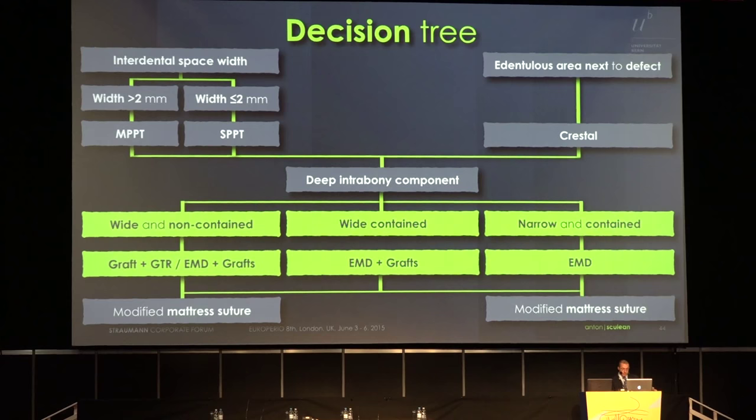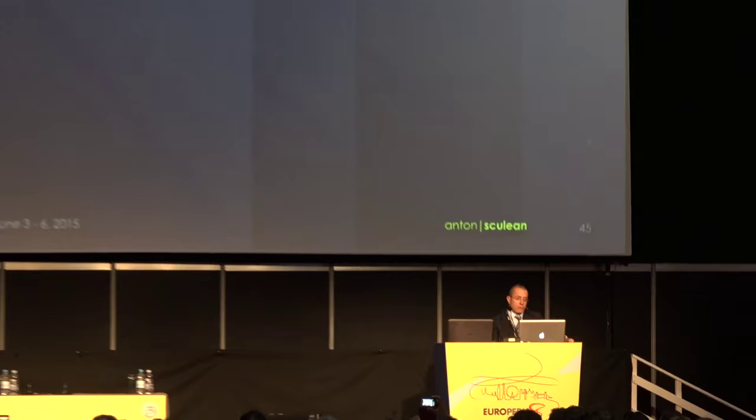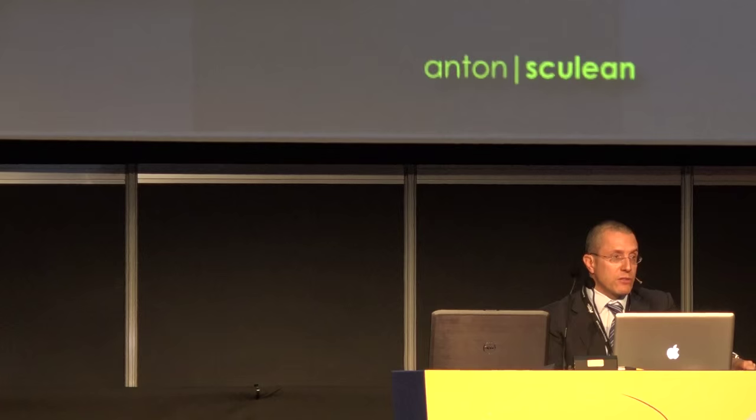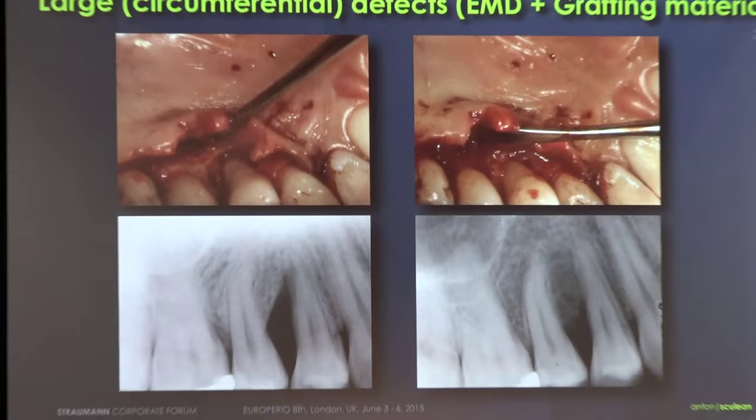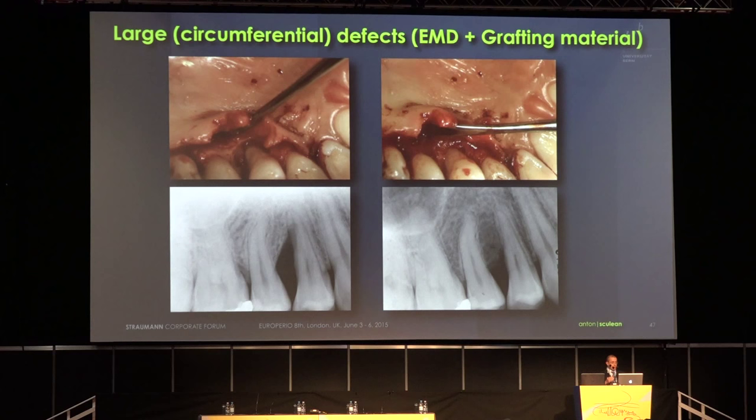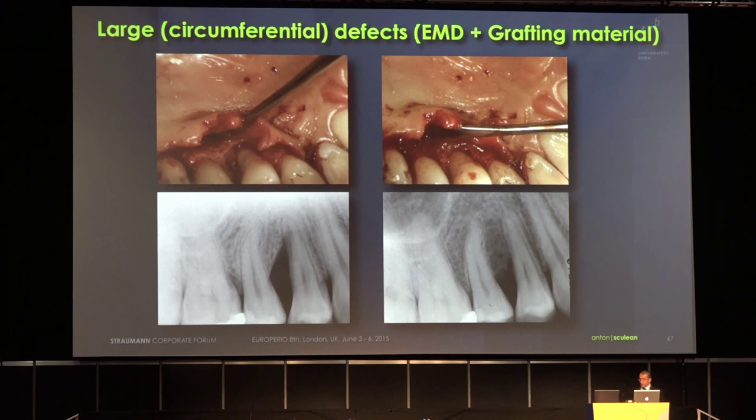What about some clinical examples? Here is a three-wall defect treated with enamel matrix proteins, with re-entry at one year clearly indicating a nice fill. And here is a non-contained, very large defect treated with enamel matrix proteins and graft — you can observe on the X-ray a very nice fill.